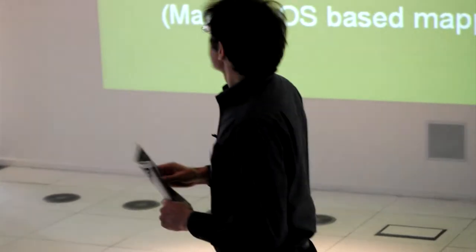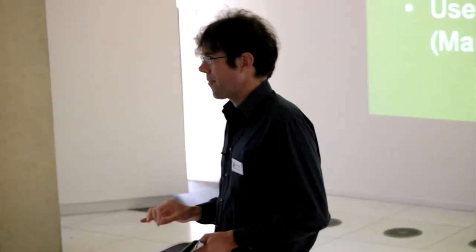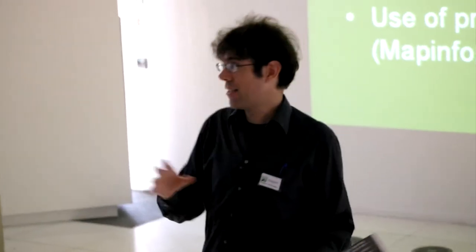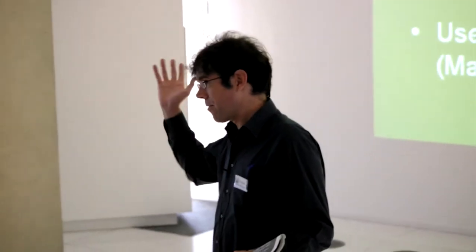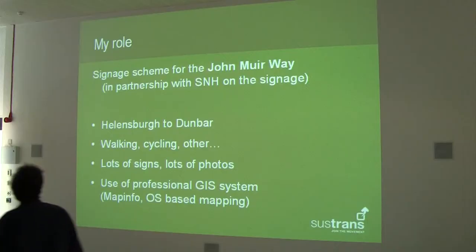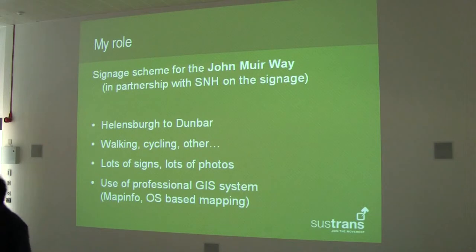My role: I have a very specific responsibility, which is to work with a signage scheme for the John Muir Way. Fundamentally it's a long-distance route linking Dunbar and Helensburgh — the equivalent of the West Highland Way, for example. I'm very interested in it for a number of reasons.